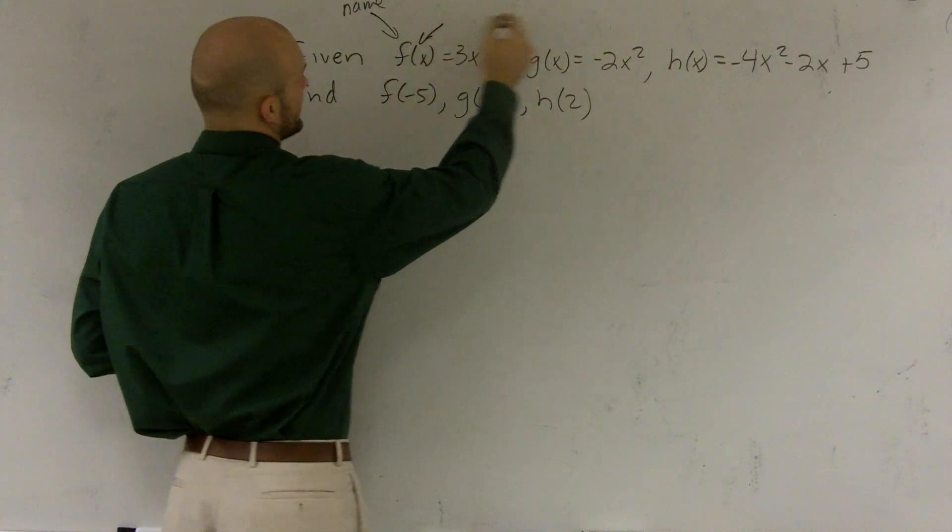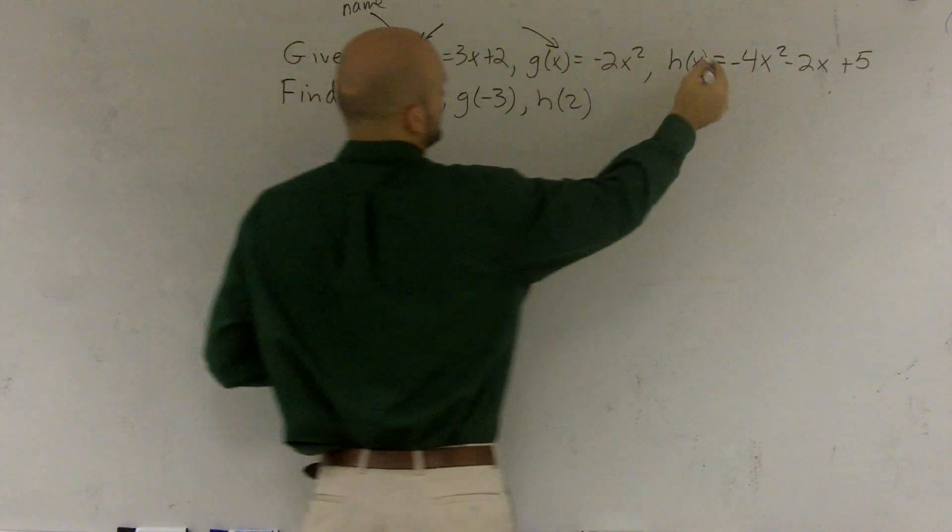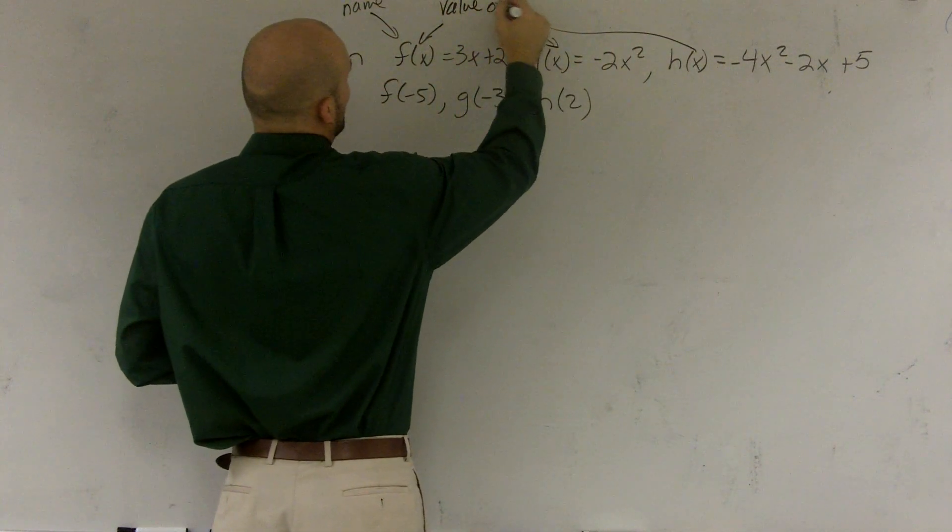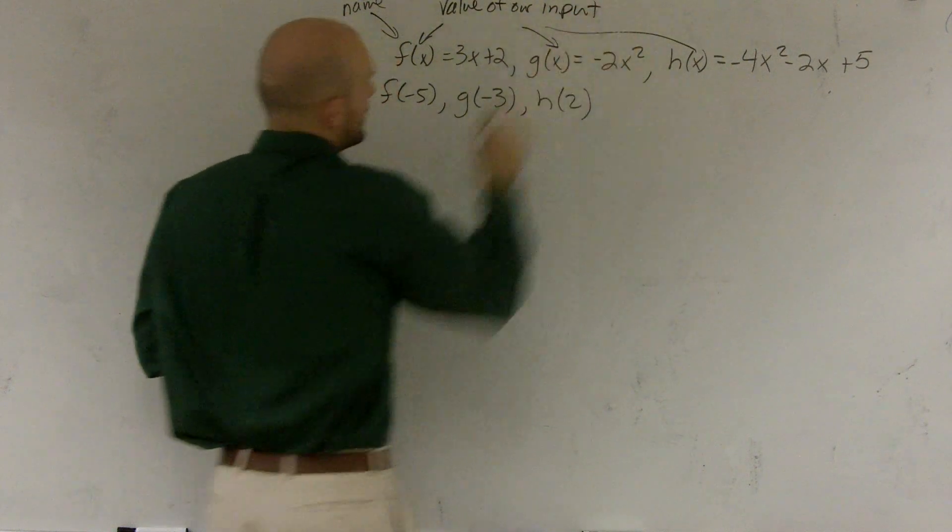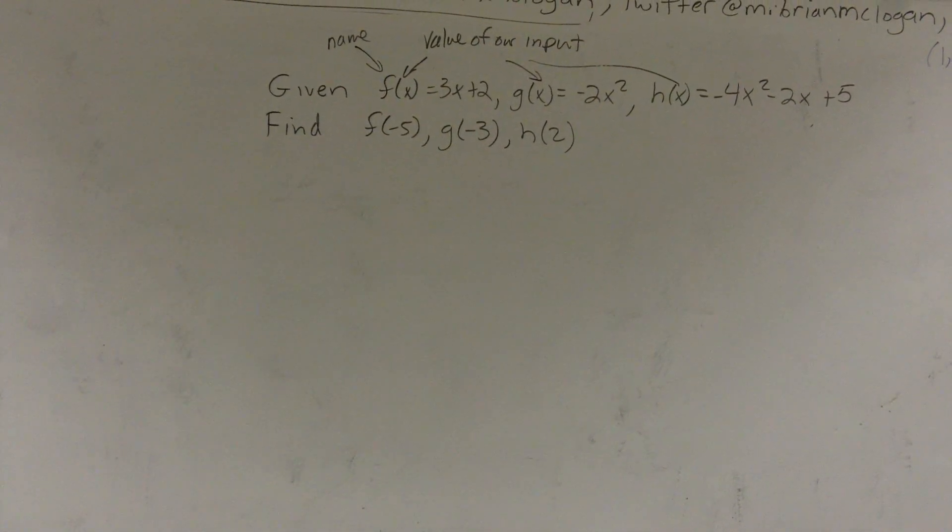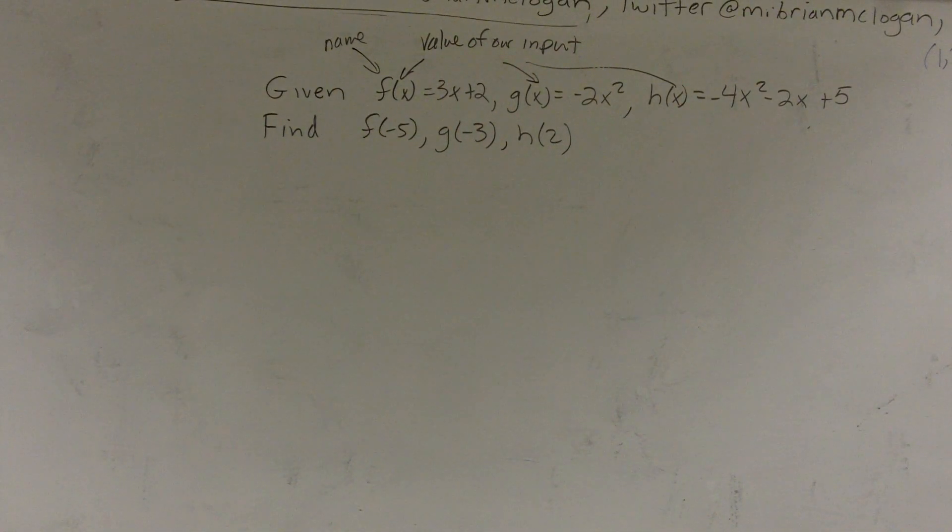Then these little x's right here, what these represent is the value of our input. I don't think that's even showing up there. Maybe just a little bit. So those represent the value of the input.